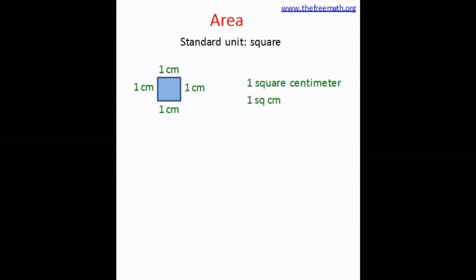Let's look at this square. Every side of this square is 1 centimeter in length, so the area covered by it is called 1 square centimeter. Here is another square where every side is 1 meter in length, so the area covered is called 1 square meter. From here onwards, we will always use the square as the standard unit to measure area — square meter, square centimeter, square kilometer, and so on.